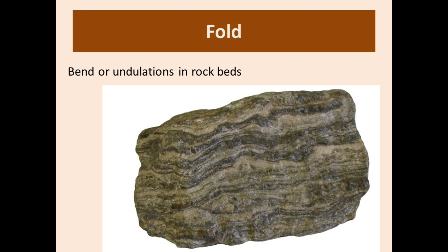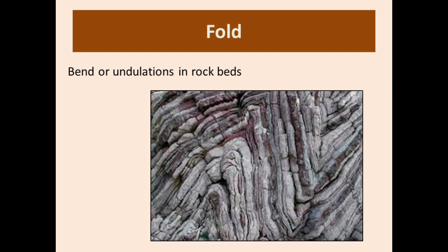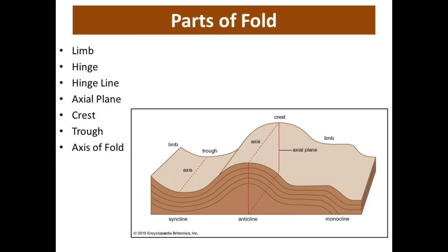This is the brief introduction of folds. Now we will discuss the anatomy of a fold — anatomy means the parts, the elements of the fold. The main elements include the limb, hinge, hinge line, axial plane, crest, trough, and axis of fold.